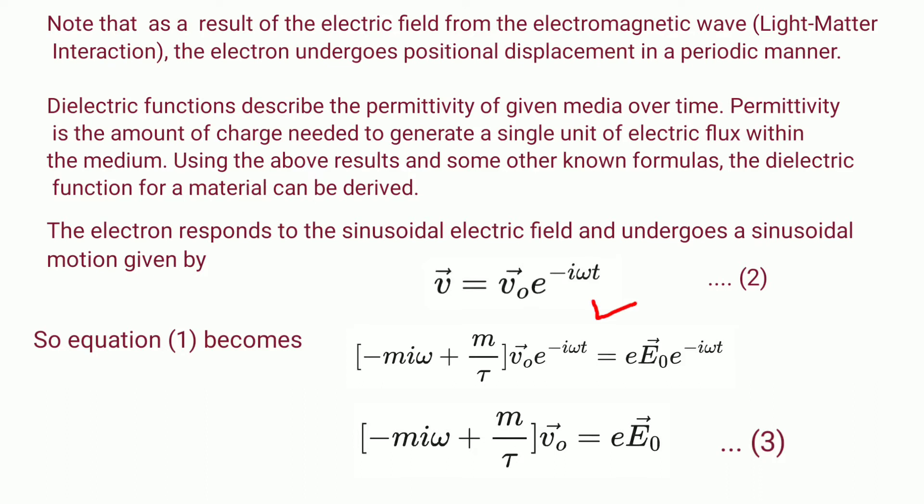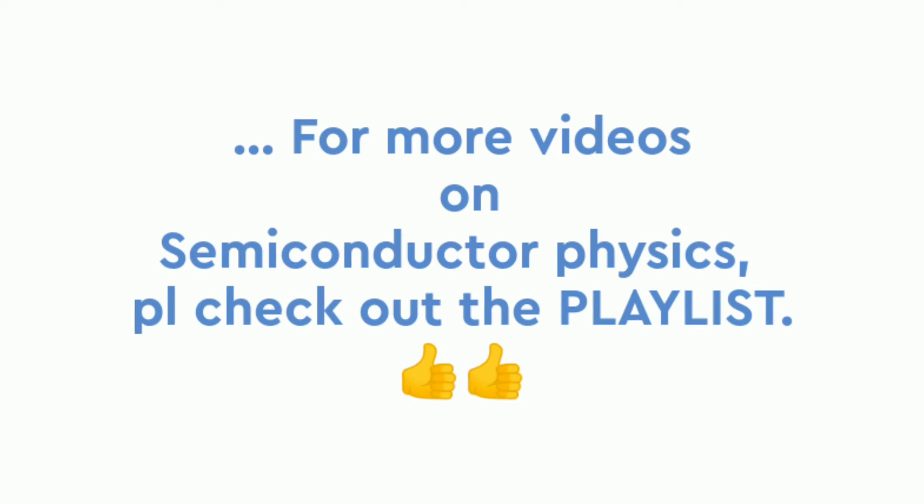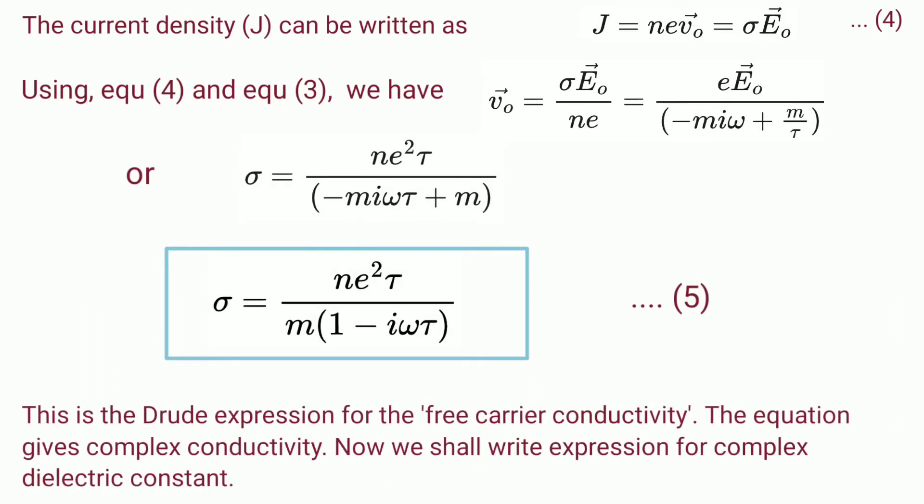Upon differentiating v with respect to time t and substituting in equation 1 we get: -miω + m/τ times v₀ = eE₀. The motion of the electron causes a current density given by J = nev₀ = σE₀. Here v₀ is the drift velocity and σ is the electrical conductivity caused by the motion.